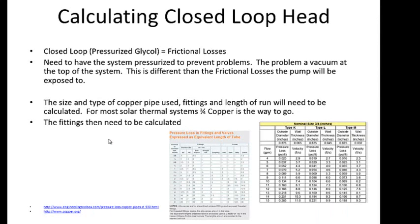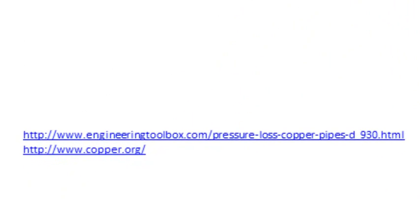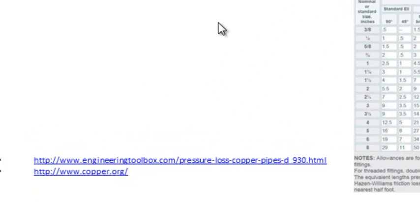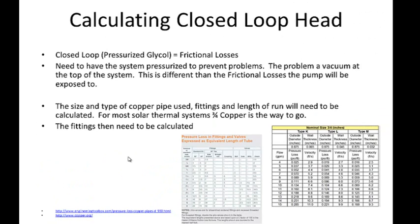Now let's calculate how much loss we have to overcome to get that fluid flowing. Using the Stiebel Eltran system, we have 1.3 gallons per minute to flow. In a closed loop system, we don't have to worry about the height of the system because it's closed and pressurized, so we can use a much smaller pump compared to a drain back, which would require a much heavier duty system. Copper.org has their Copper Pipe Handbook, and the Engineering Toolbox has a nice website linked here, giving us data to calculate fluid flows and head losses.